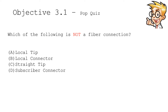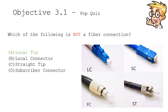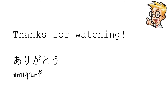Which of the following is not a fiber connection? A: local tip. B: local connector. C: straight tip. D: subscriber connector. And the answer is local tip — we didn't have that one in the video. So, thank you for watching.